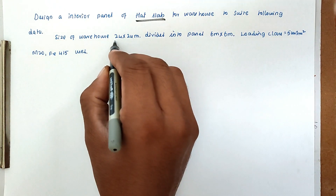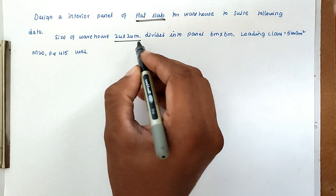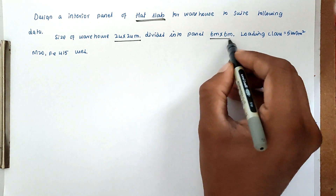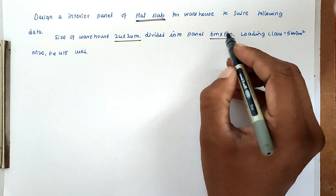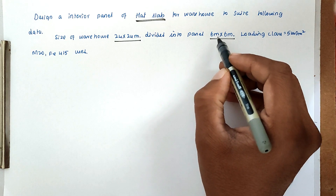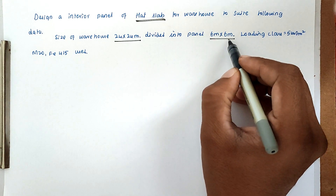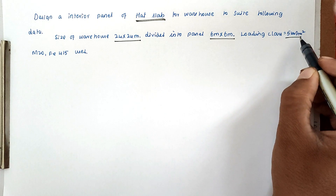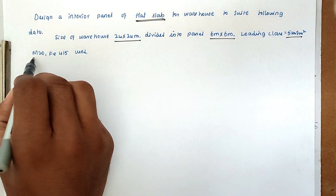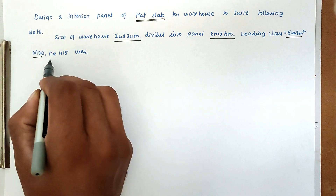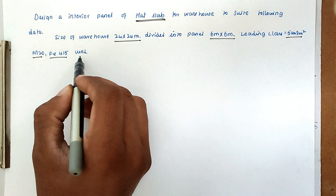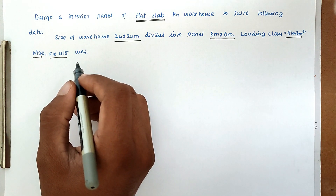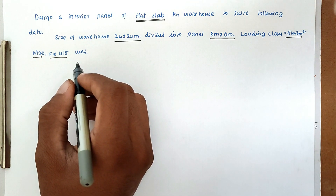The size of the warehouse is 24 x 24 meters, divided into panels of 6 meter x 6 meter. So we have to design the flat slab for 6 meter x 6 meter. The loading class is 5 kN per meter square. Use M20 grade concrete and Fe415 steel. We have to find out the slab, flat slab, and column head dimensions.